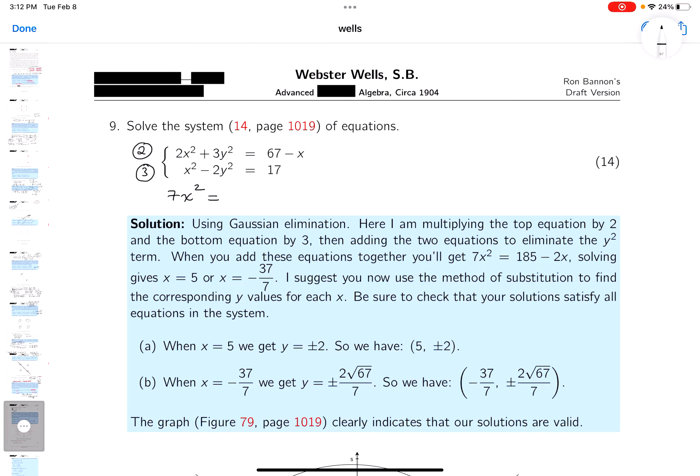Then what do you get? 2 times 67, that's 134. And 3 times 17, 51. What's it going to give you? 185. Then what do you get? Minus 2x.